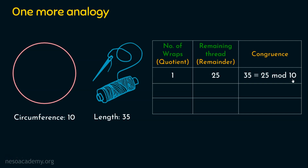Let's do the wrap-around one more time. Now I have 25 units remaining. I am going to wrap this thread around the circle one more time. When I do this for the second time, how much thread will I have? Previously I had 25 units; now I will have only 15 units because the circumference is 10. I have done it two times, so 20 units have already been wrapped around, leaving only 15 units. The equivalent congruence is 35 is congruent to 15 mod 10. This is a valid congruence if I do the wrap-around two times.